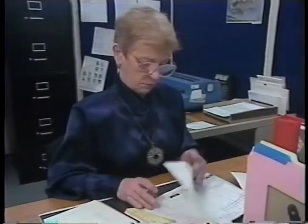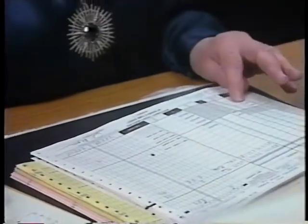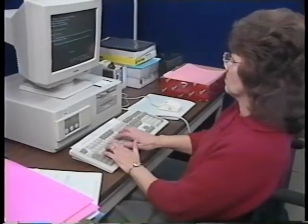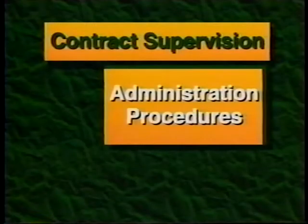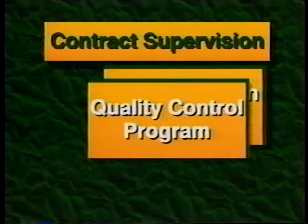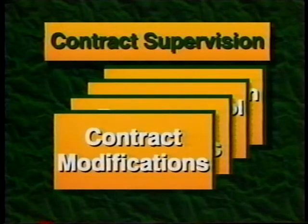At the same time as some agency people are going through the solicitation and award process, others should be finalizing the contract supervision procedures. These procedures must be ready when the award is made to a contractor. They include administration procedures, quality control program, payment procedures, contract modifications, and training.